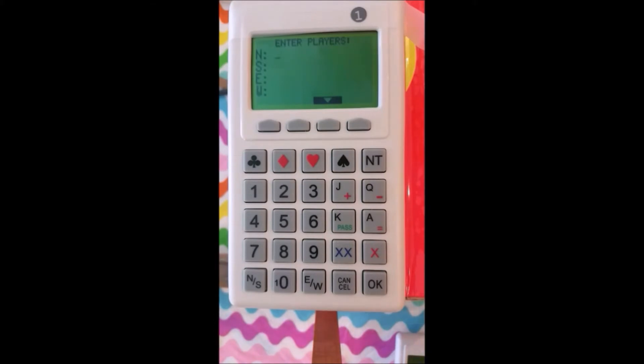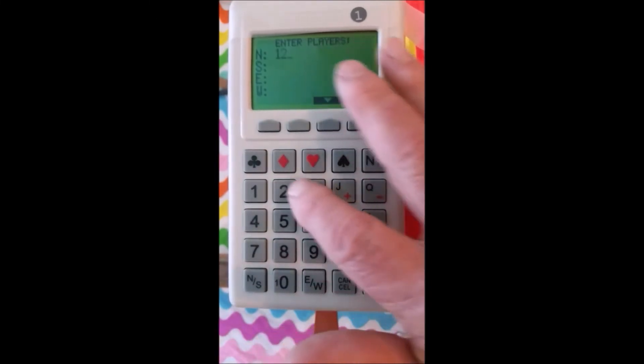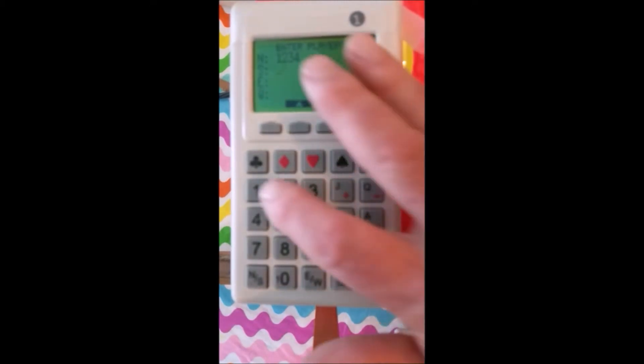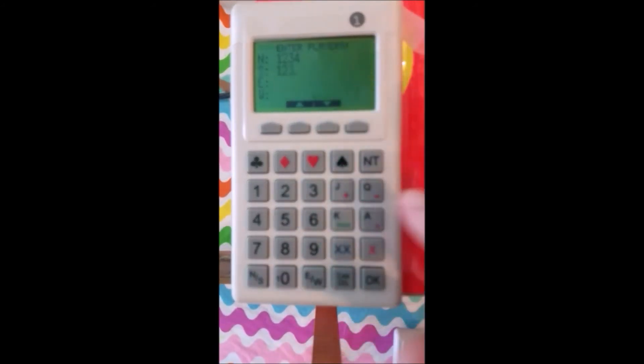And it wants to know North's ID. So I'm going to put in North's ID now, which is 1234, and say OK. Now it says what's South's ID? In this case, it's 1236. And I'm going to say OK again.